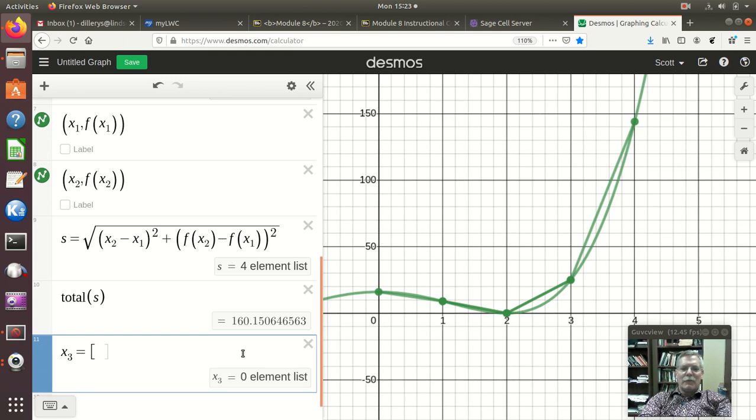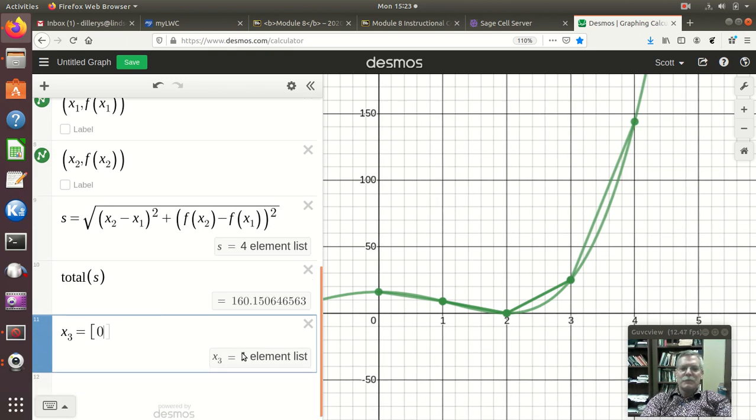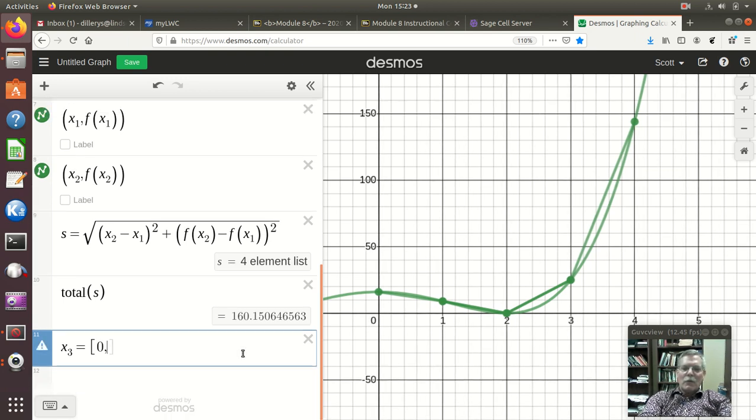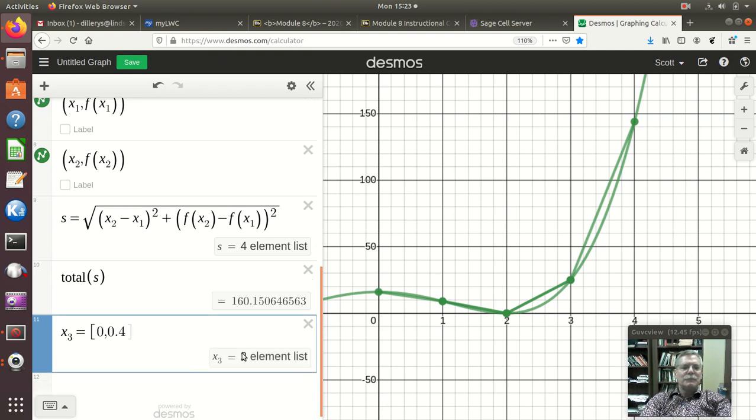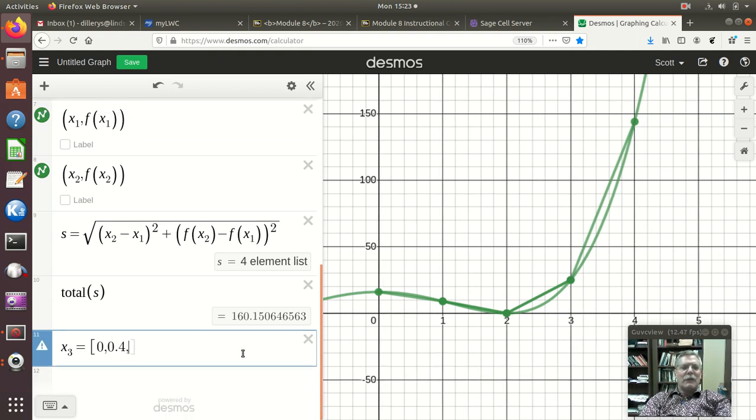So, I'd start at 0. And, then, I would go to 0.4. And, then, I would keep going like that. So, I put a comma and then dot, dot, dot. And, I'm going to stop at 4. So, comma, 4. And, it says it's an 11 element list.